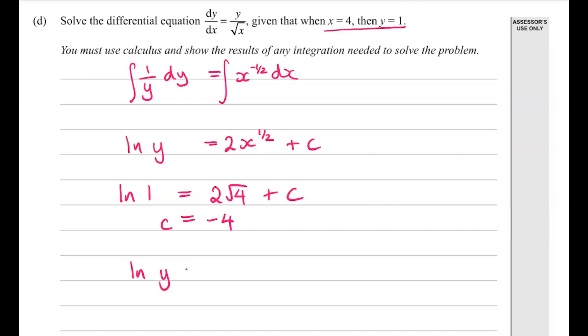So therefore, our equation becomes ln y is equal to 2 root x minus 4. So y is equal to e to the 2 root x minus 4.